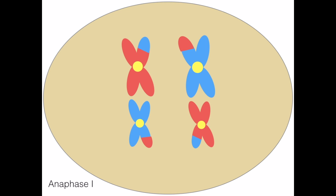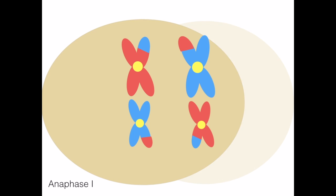To prepare for telophase 1, the cell membrane begins to form cleavage until the cell splits into two diploid cells.